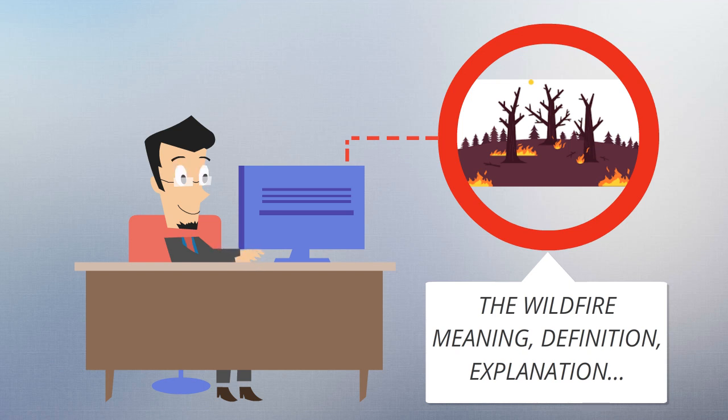Wildfires' occurrence throughout the history of terrestrial life invites conjecture that fire must have had pronounced evolutionary effects on most ecosystems' flora and fauna. Earth is an intrinsically flammable planet owing to its cover of carbon-rich vegetation.